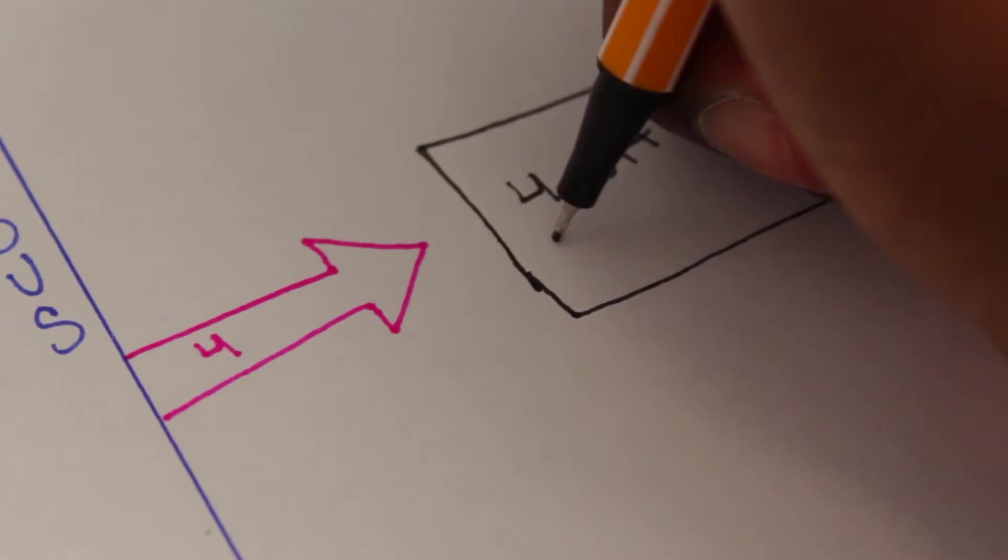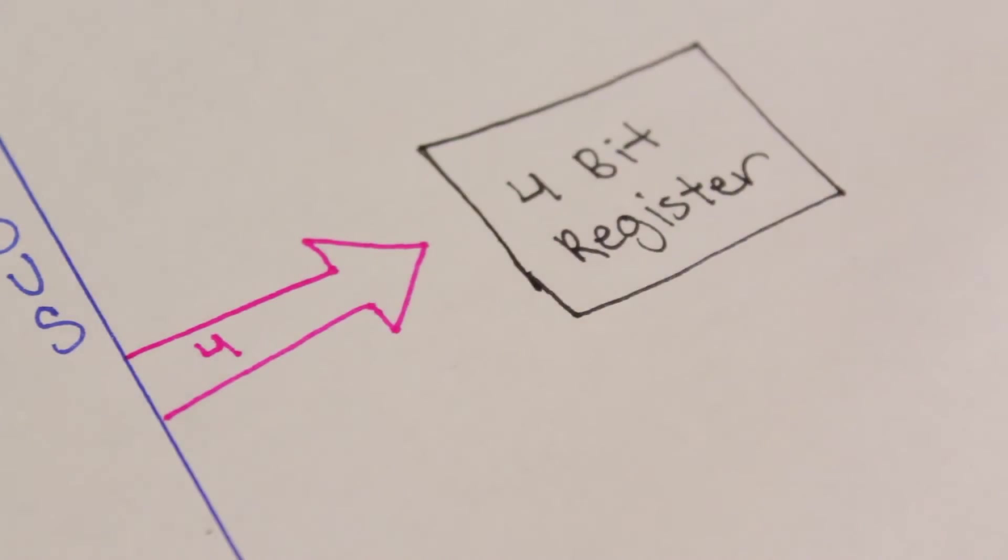For the actual register, the four X values or memory address bits come from the bus and go into a register to be stored. The output of this register connects back to the bus because our MAR for the RAM module is connected to the bus, so we transport our data through the bus.